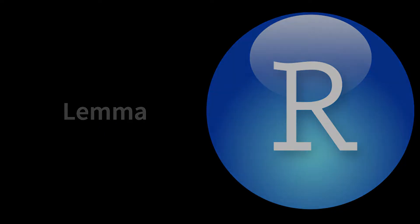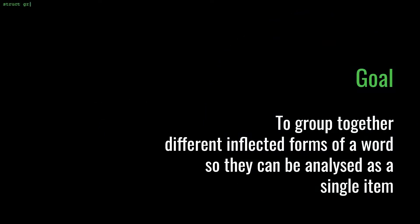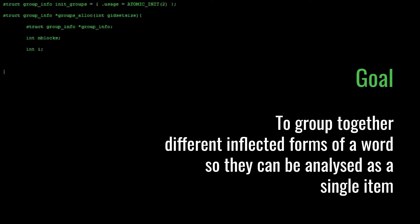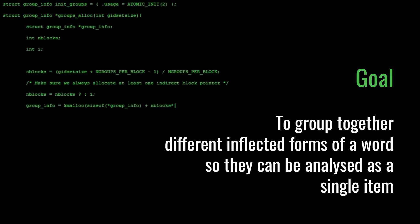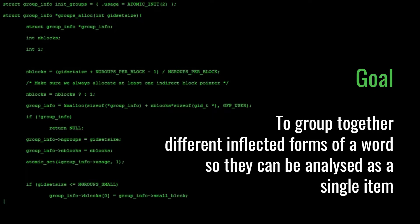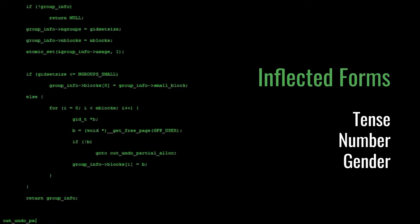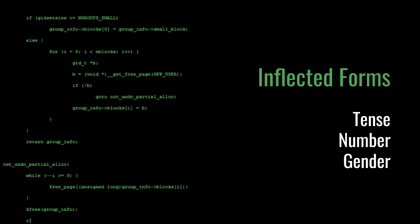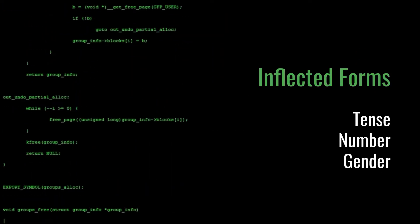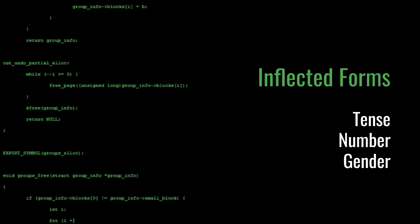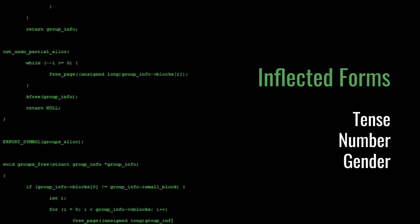In lemmatization, our goal is to group together different inflected forms of a word so they can be analyzed as a single item. Inflected forms are variations of a word that change its grammatical function, like tense, number, and gender.